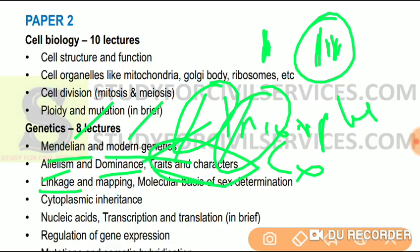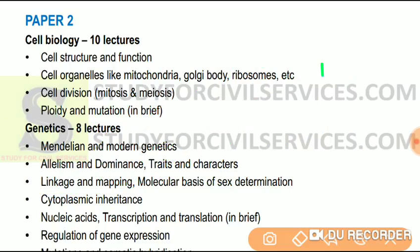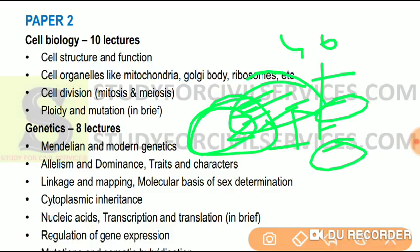Next we have linkage — complete linkage and incomplete linkage, and linkage mapping using centimorgan units. A numerical question can be framed here where you are given a linkage map and must correctly place gene positions — for example, 25 centimorgans between two genes. If the question is very difficult, a circular plasmid map may be given, though that is rare. We will study everything so that whatever type of question comes, you are ready to tackle it.